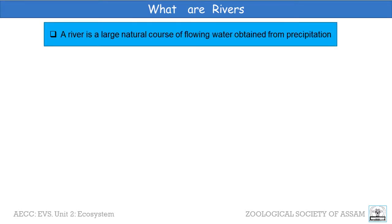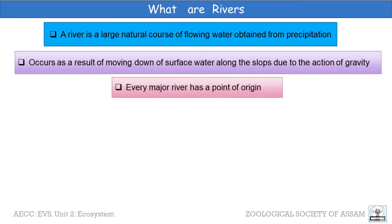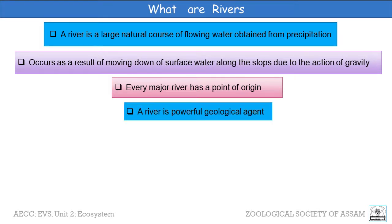A river is a large natural course of flowing water obtained from precipitation. On the basis of the types of habitats, rivers are flowing water habitats or water bodies. It occurs as a result of moving down of surface water along the slope due to the action of gravity. Every major river must have a place of origin on the upstream side, termed as headwater, and a point of confluence with the sea or water body at the downstream end. Thus, river water is always on the move. A river is a powerful geological agent as it has the capacity to erode, transport, and deposit sediments, that is river alluvium.